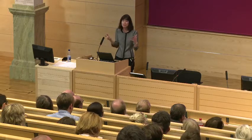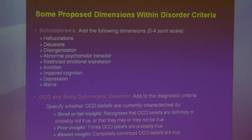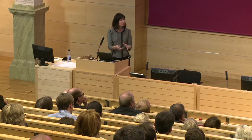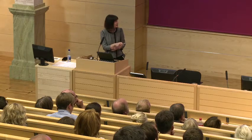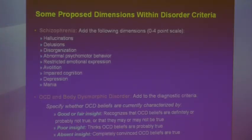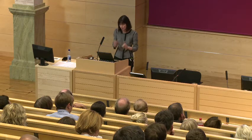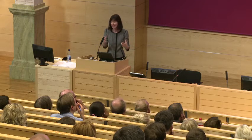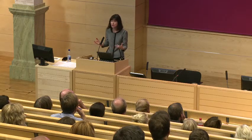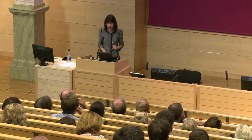The idea is to use a simple zero-to-four-point scale and rate each patient's symptoms on these dimensions, which will better characterize the patient's presentation and potentially be useful for treatment. Adding these specifiers to OCD and BDD is an example of dimensions added within diagnostic criteria for specific disorders. Dimensions are being added in a variety of ways to DSM-5, whereas they are pretty much absent from DSM-4.